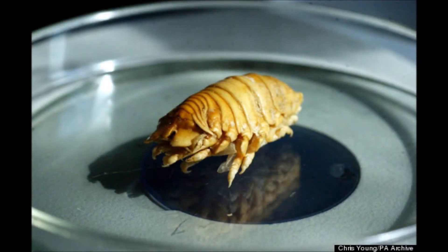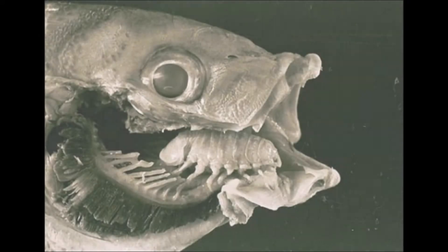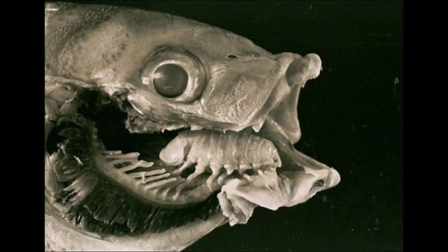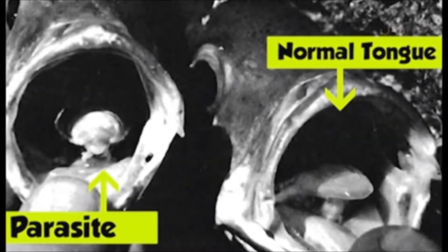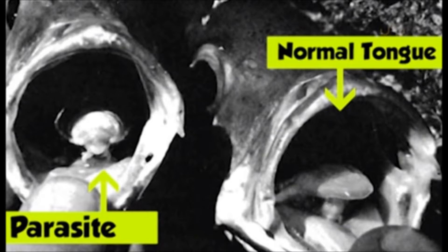The parasite has the ability to enter the fish through its gills and then attach itself onto its tongue. Basically, it is a crustacean that lives in the mouth of the fish, consuming the tongue and then replacing it with itself — a process that is unpleasant for the host.